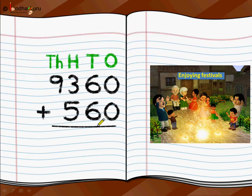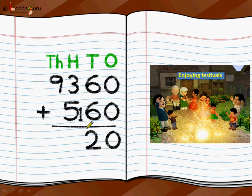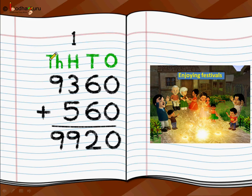So how do we calculate it? Very simple. Starting from the 1's position: 0 plus 0 is 0. 6 plus 6 is 12 — the 1 goes to its neighbor at the 100th position. Then at the 100th position: 1 plus 3 is 4, and 4 plus 5 is 9. Then we move to the 1000th position: 9 plus 0 is 9. So during the festival time, 9920 people were there in that town.